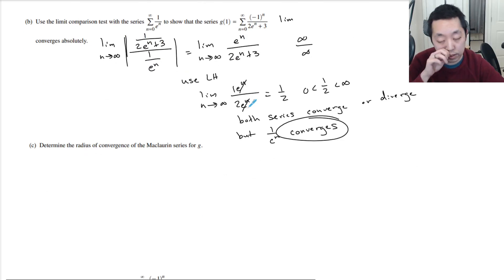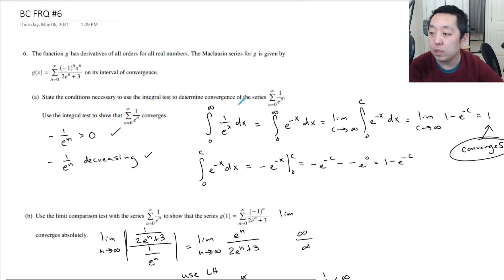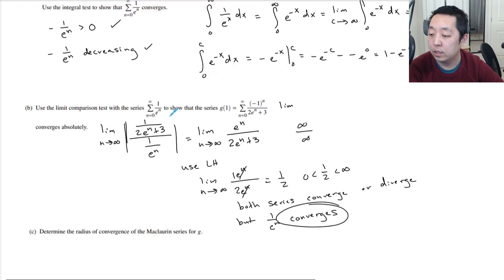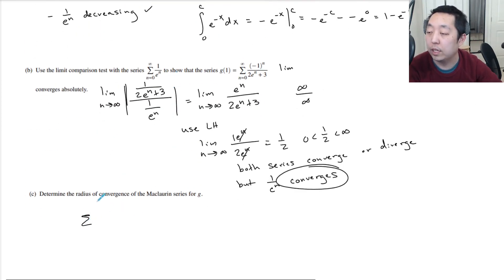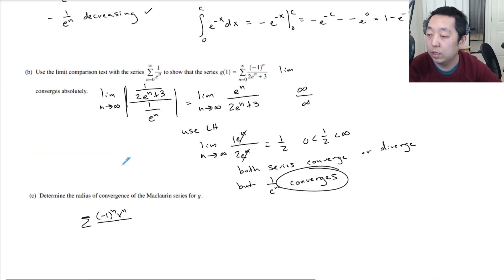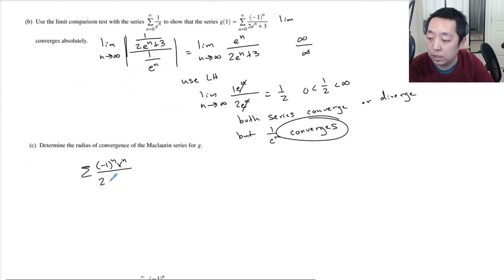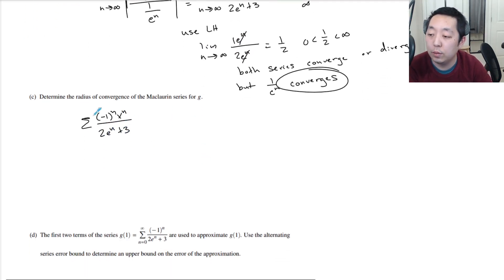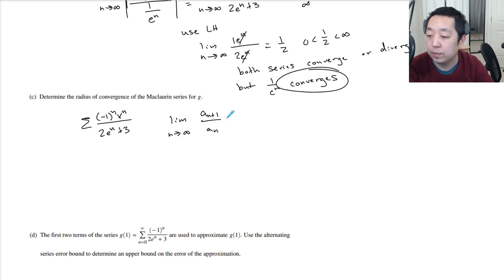Determine the radius of convergence for the Maclaurin series. The radius of convergence — we have to look at this series here. I'm going to rewrite the sum as negative 1 to the n times x to the n over 2e to the n plus 3. So here what we want to do is a ratio test: limit as n goes to infinity of a of n plus 1 over a of n, absolute value of this.